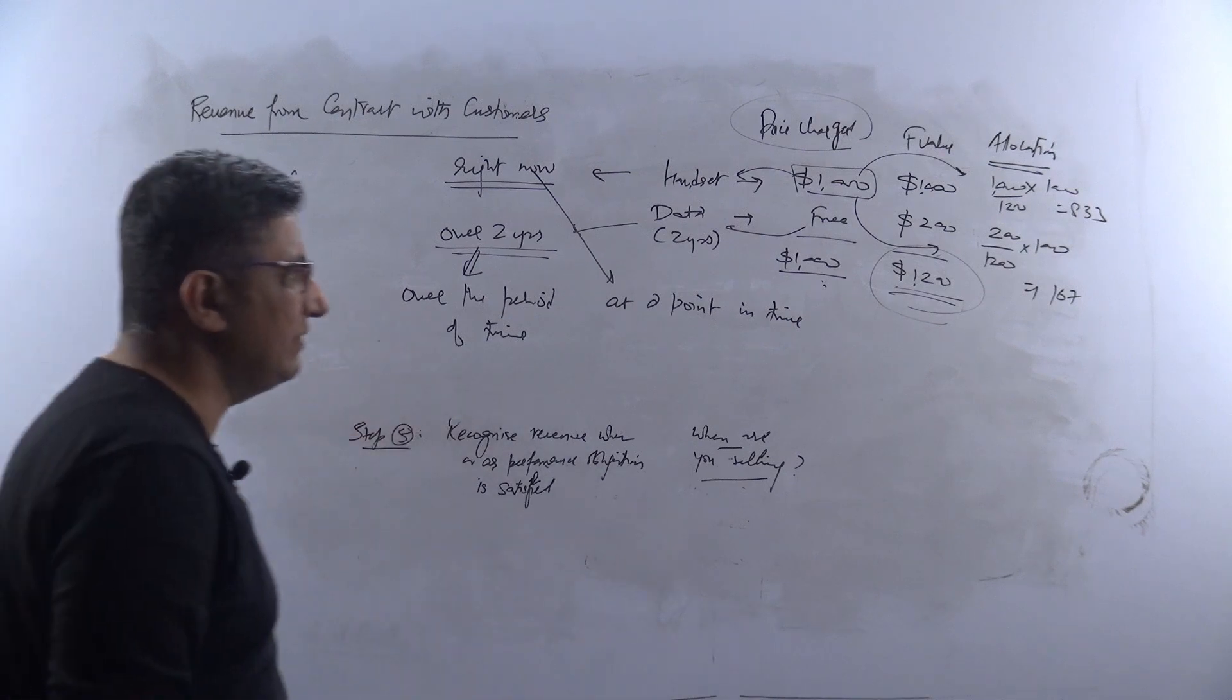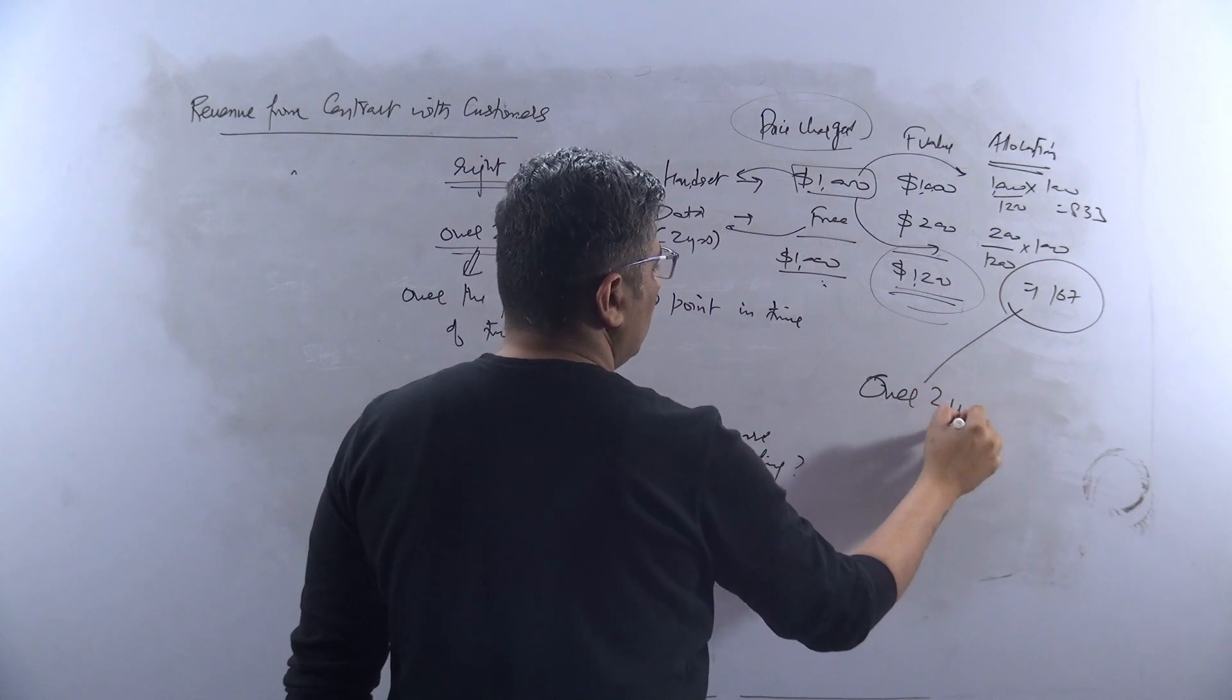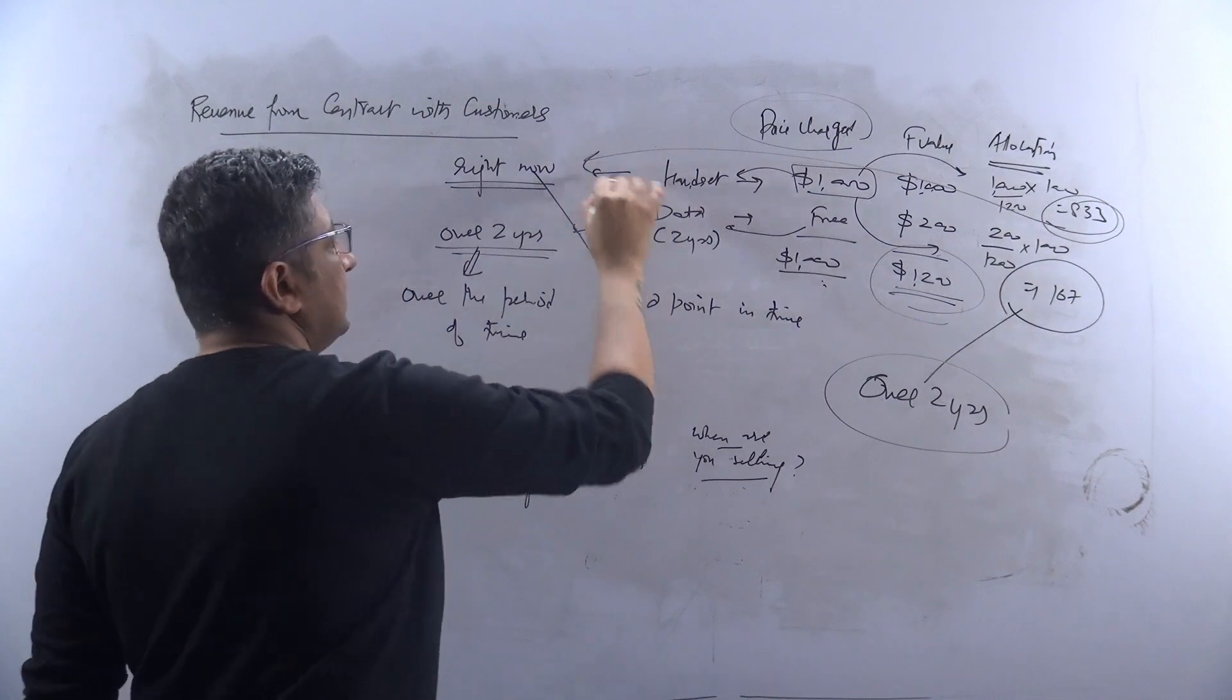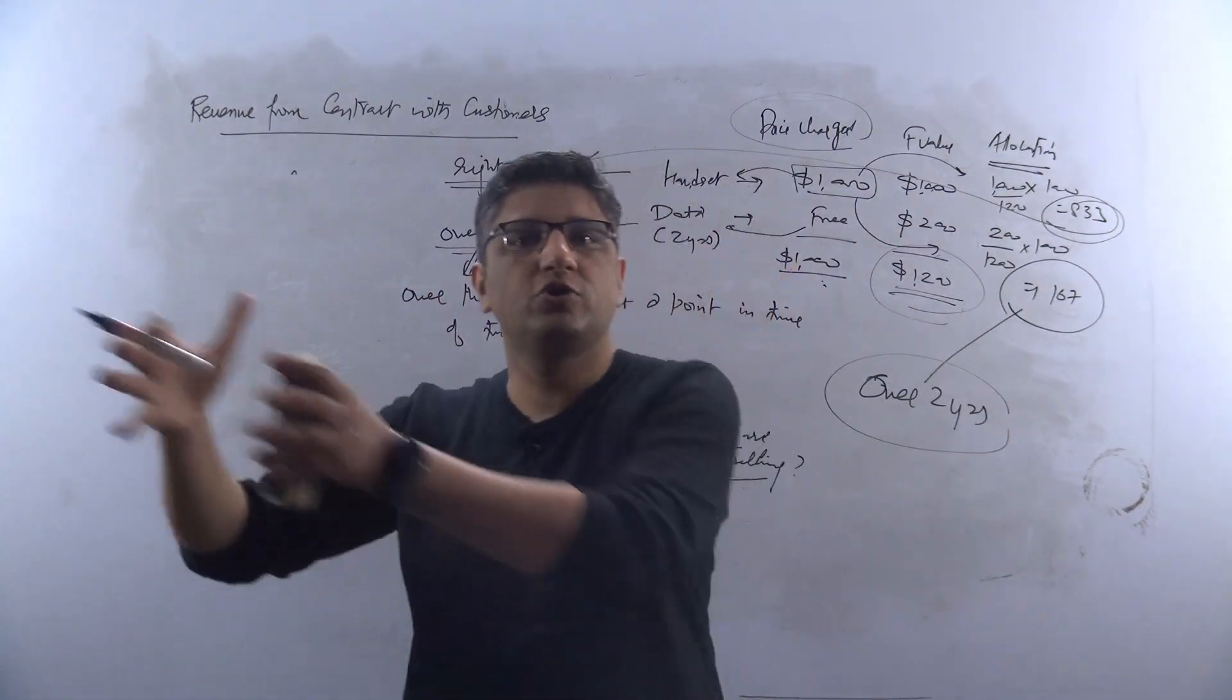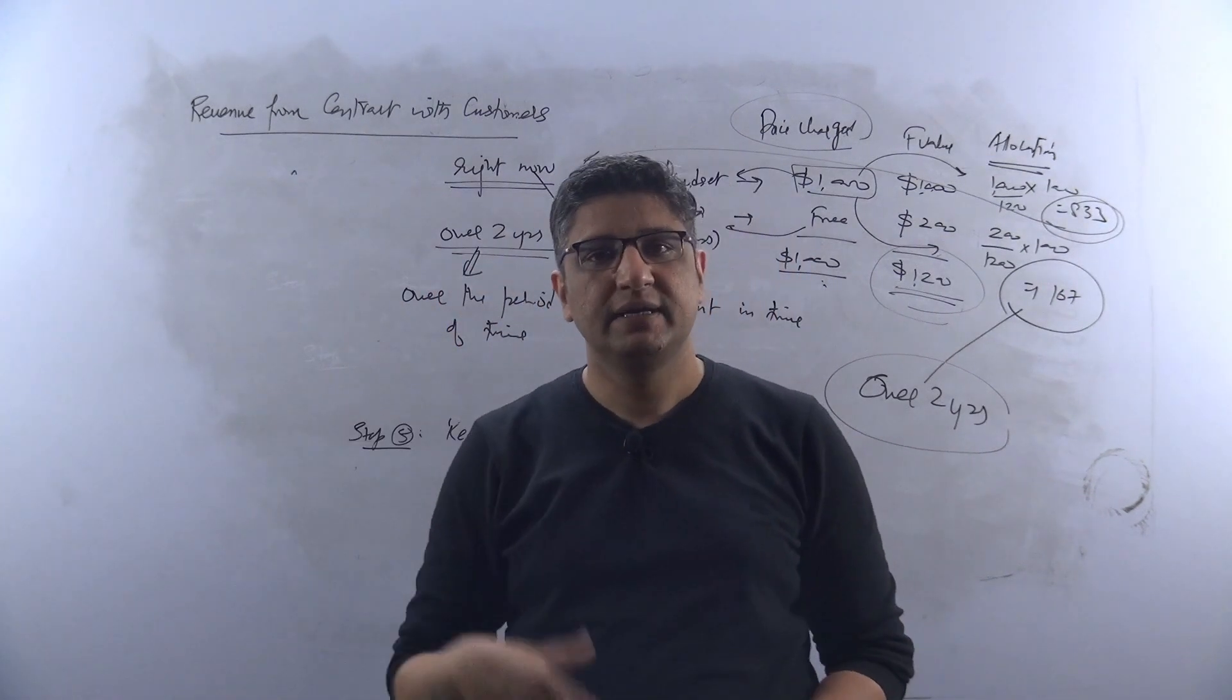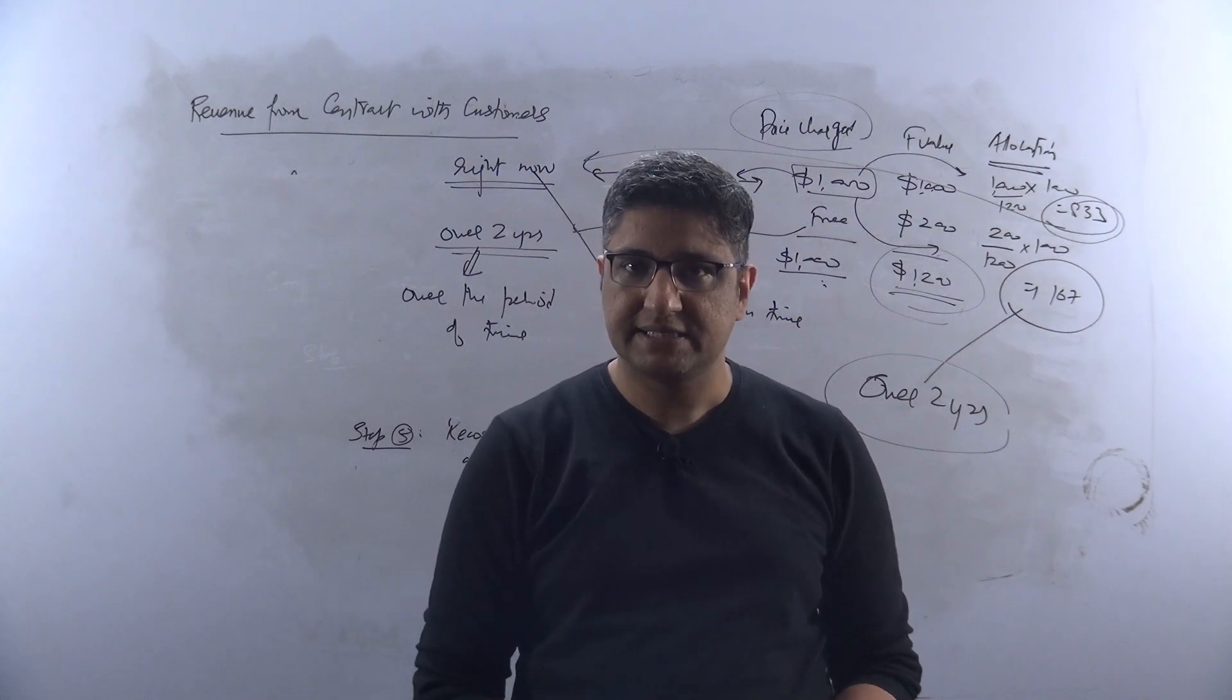Like in this case, this $167 will be recognized over two years, and this $833 will be recognized the moment you hand over the phone or you give control to the buyer. The moment you transfer the control to the buyer, that is where this revenue of $833 will be recognized.